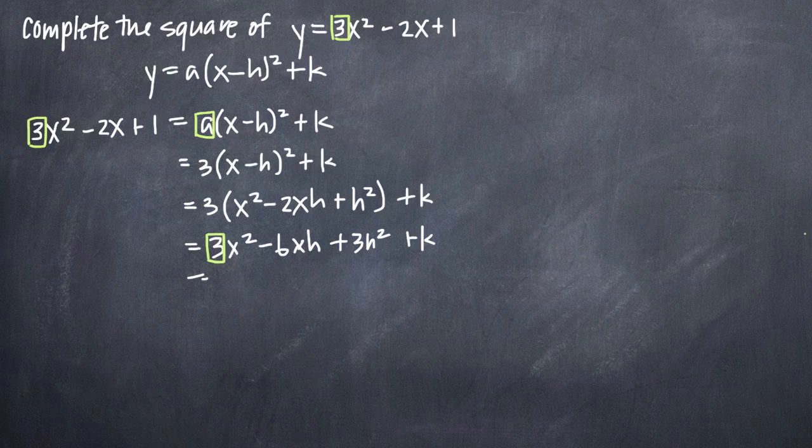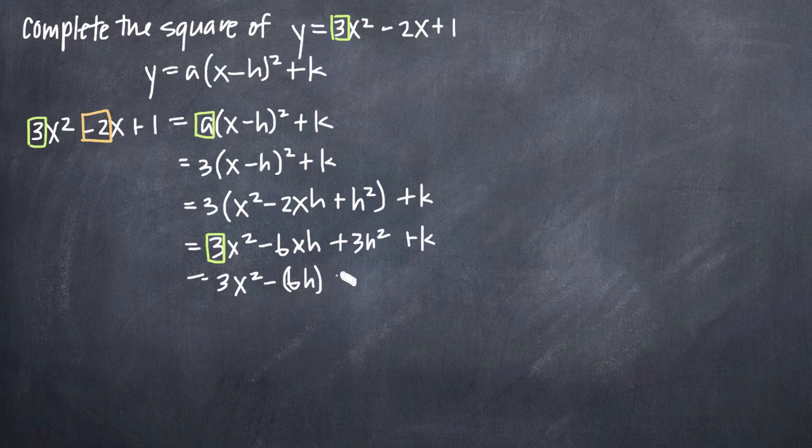However, the coefficient on the x variable on the left hand side is negative 2. The coefficient on x to the first is negative 2. On the right hand side, that's going to be made up of negative 6 and h here because we can rewrite this to be 3x squared minus 6h times x plus, and then we can group 3h squared and k together. They both represent constants. So, 3h squared plus k.